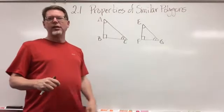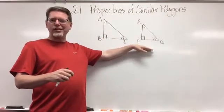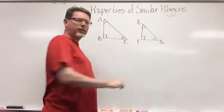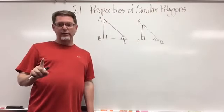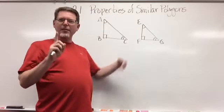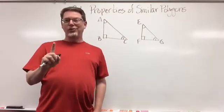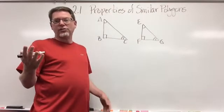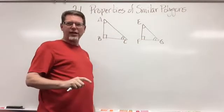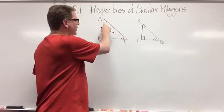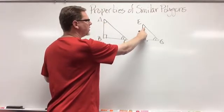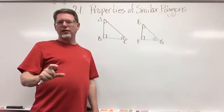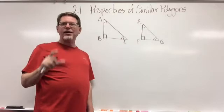So, properties of similar polygons. I've drawn two triangles that are similar — triangle ABC and triangle EFG. Triangle ABC is bigger than triangle EFG, but their angles are the same. I've got a box in each, which means a 90-degree angle, so angle B is exactly the same measure as angle F. Angle A in the big triangle has one loop, which matches the one loop on angle E — that's how we know those two angles are corresponding.